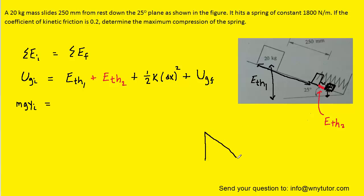In essence, we have a right triangle. We know that this angle is 25 degrees. We know that the block will travel 250 millimeters before it hits the spring. But then it's going to continue on and compress the spring by some amount that we have called delta x.